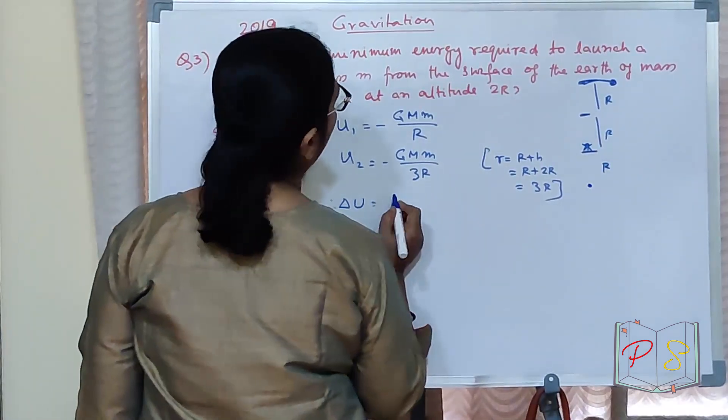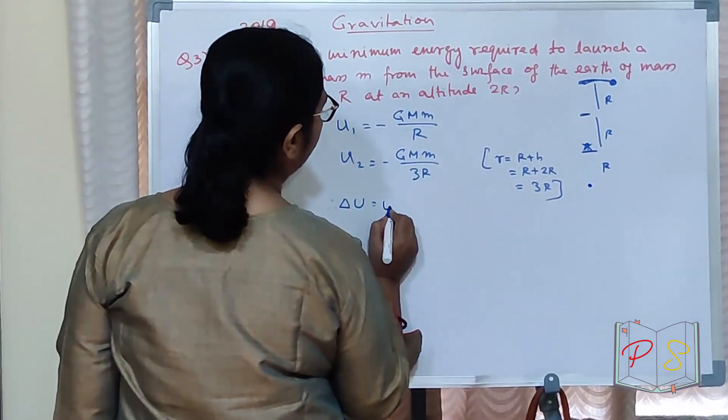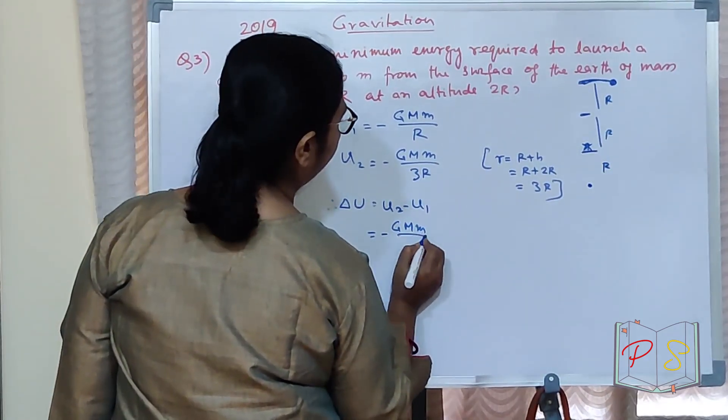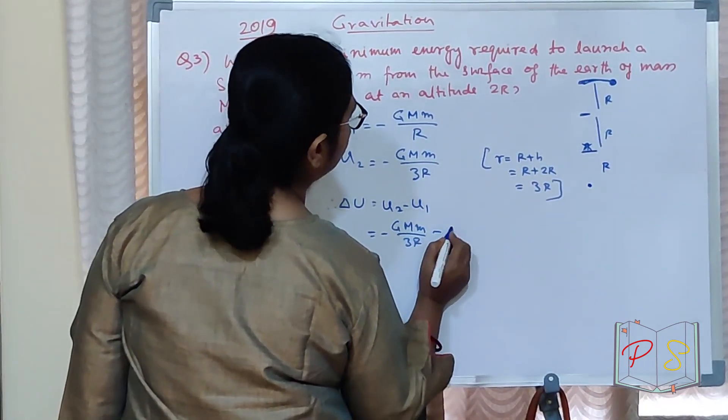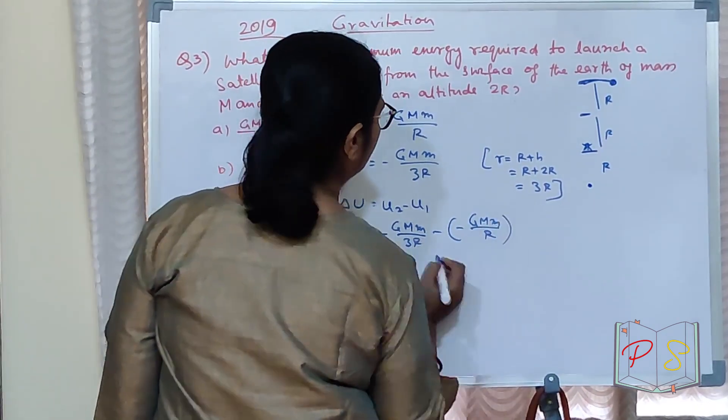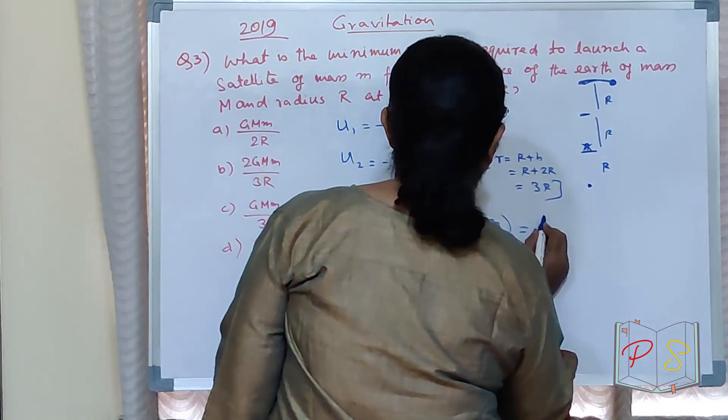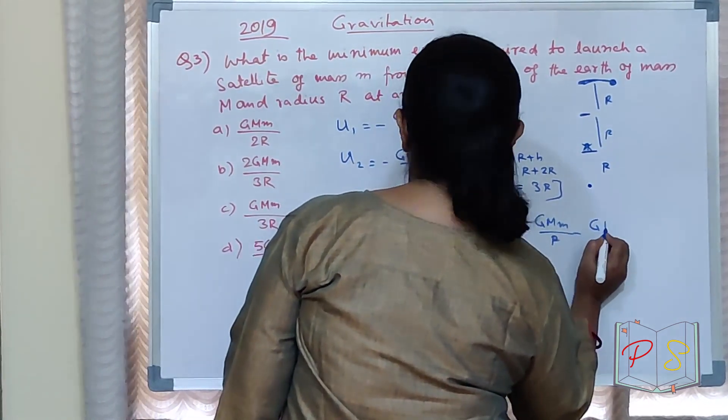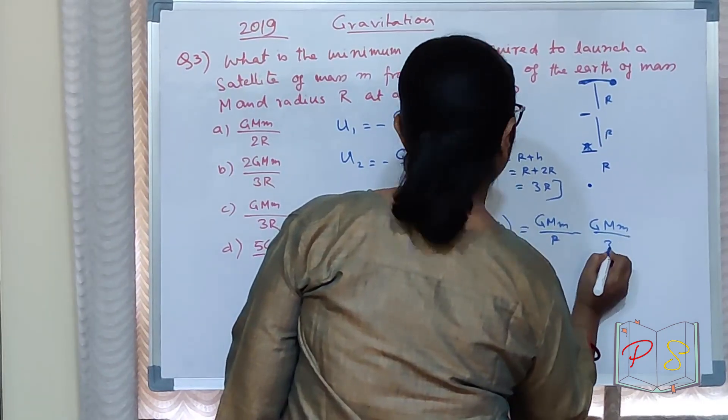Minus GMm by 3R minus minus GMm by R. GMm by R minus GMm by 3R.